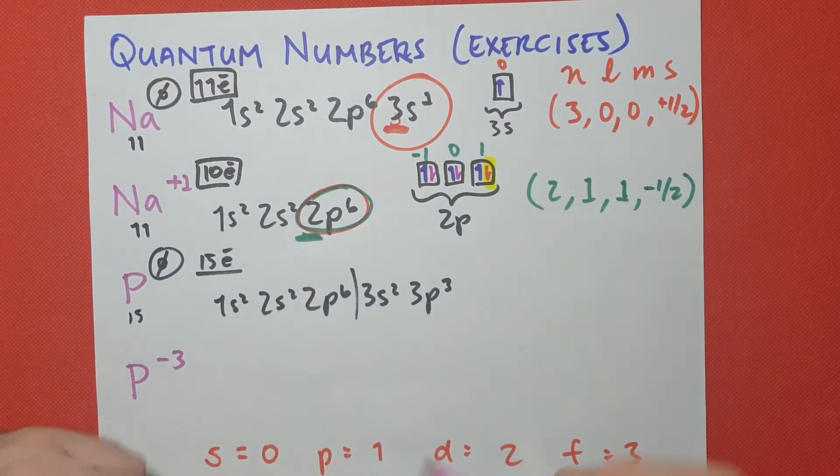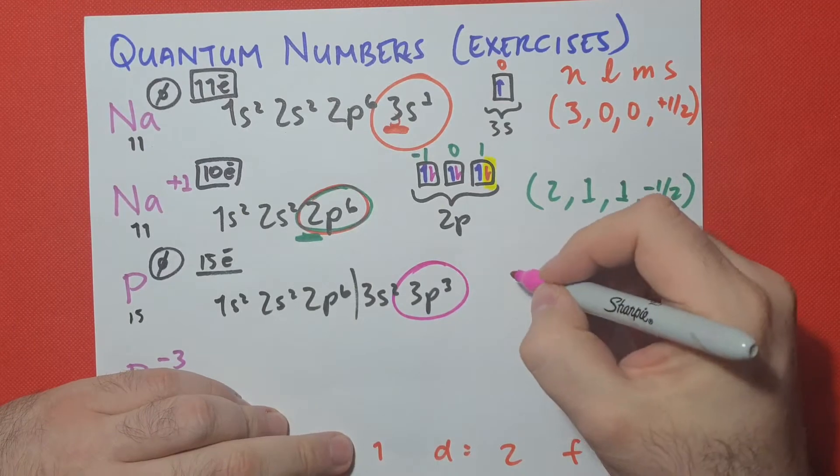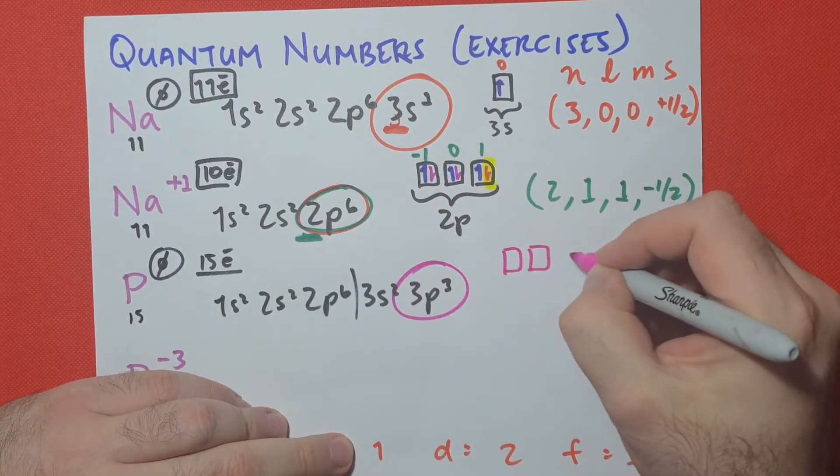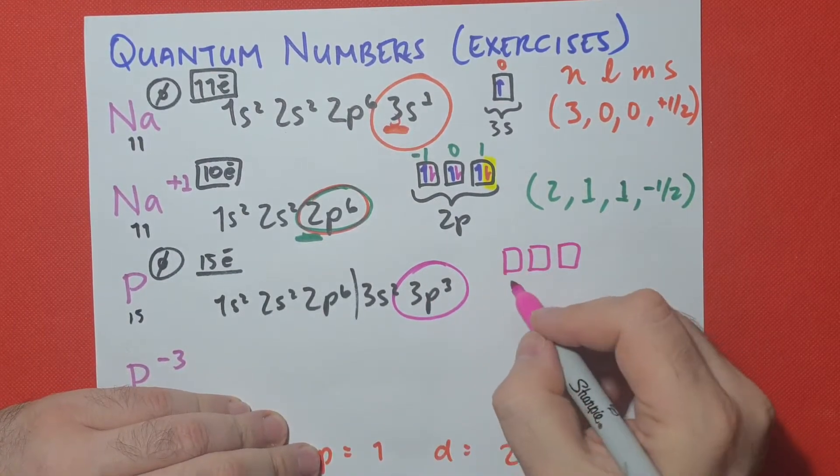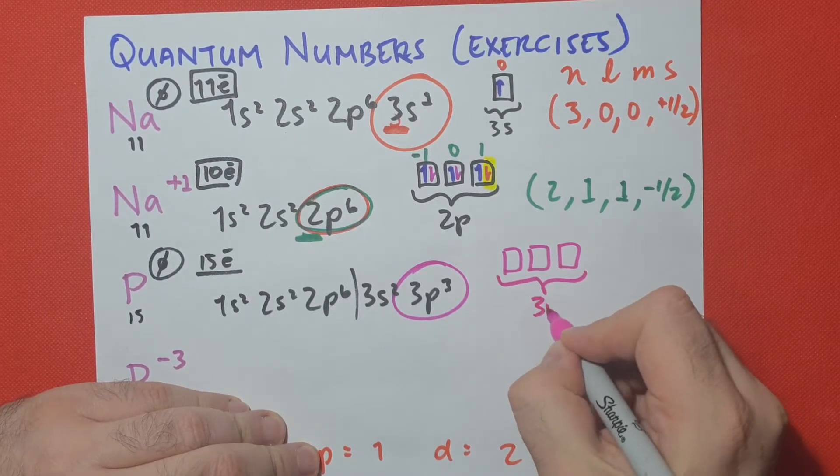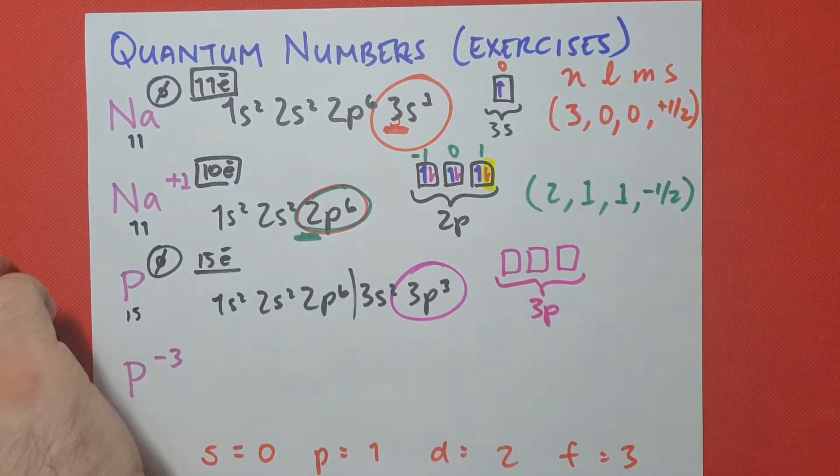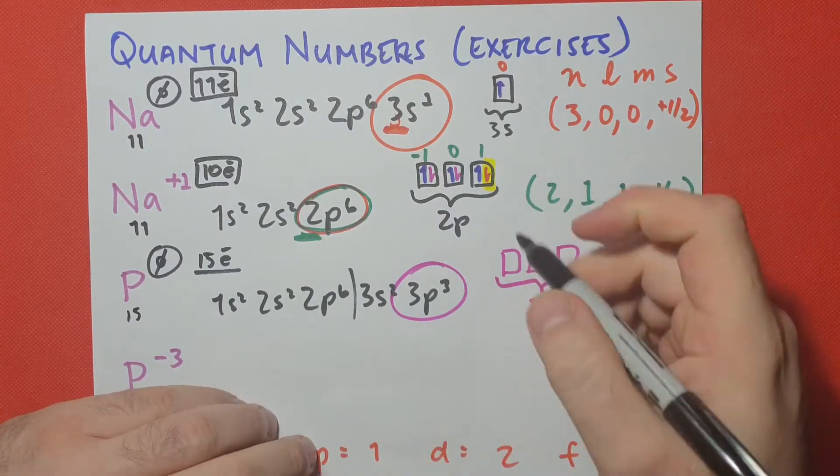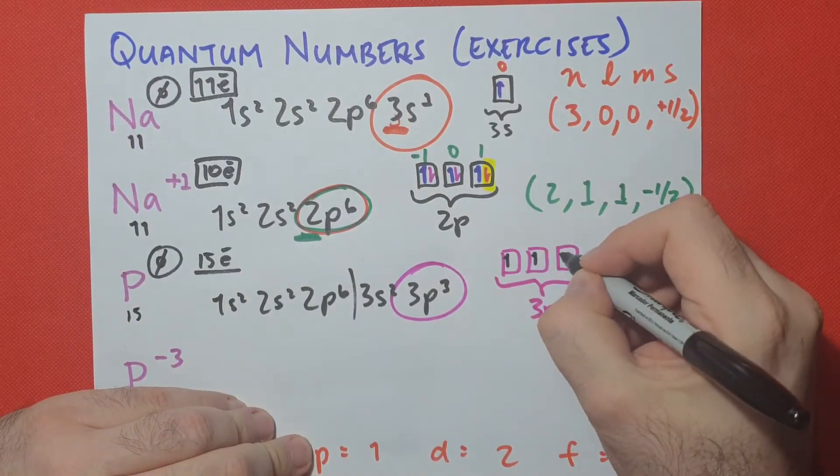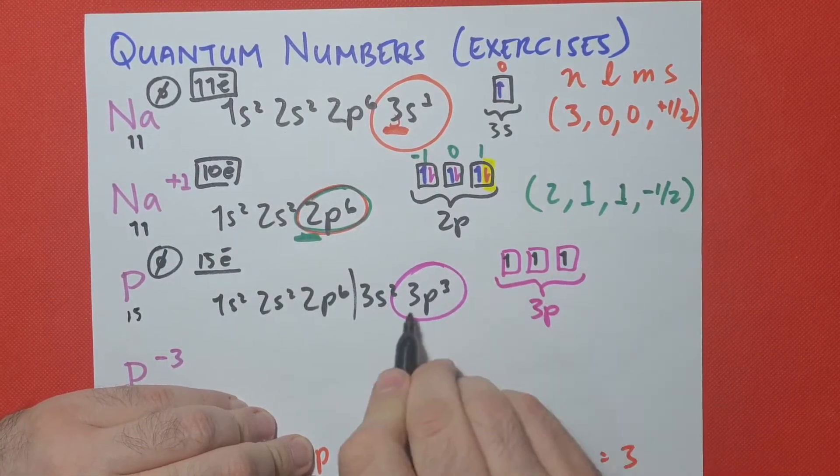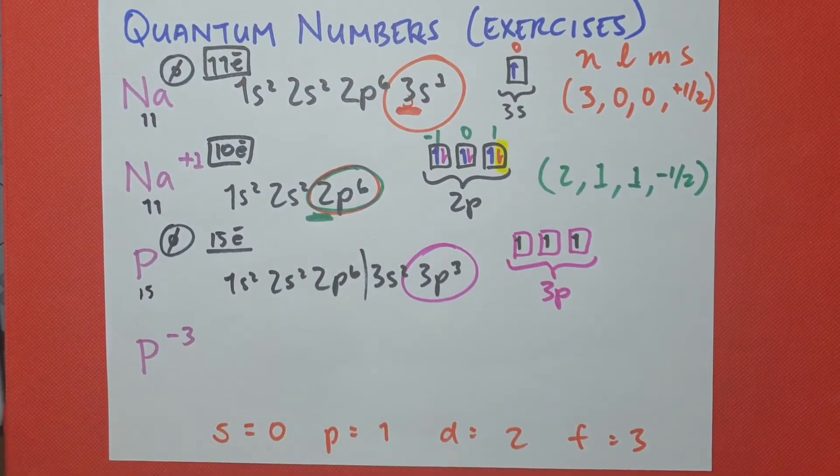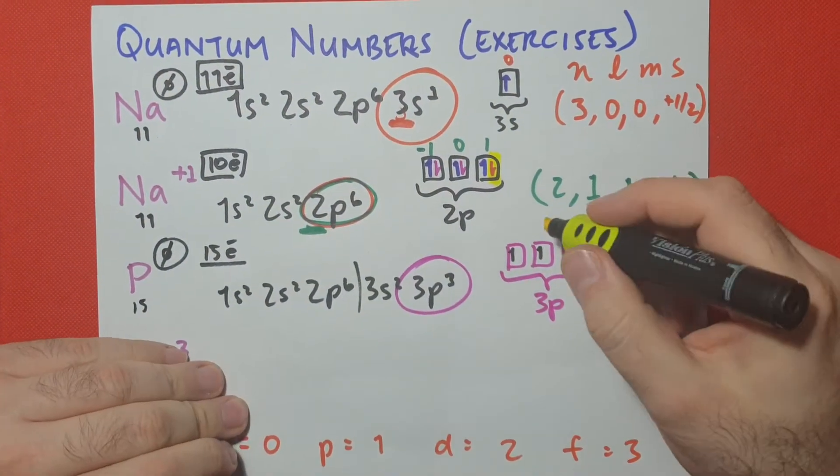We look at that last orbital, 3p. We're going to draw our little boxes. Again, three boxes for p, because p has three different orientations. This is called 3p. And we're going to write our up spin electrons. 1, 2, 3. And we're done, because we already filled those 3p electrons.